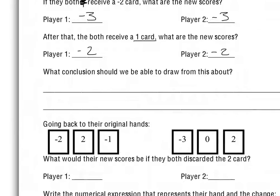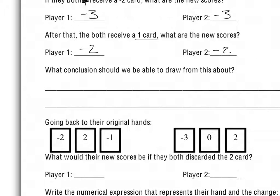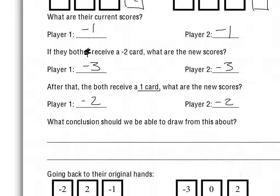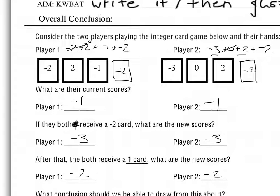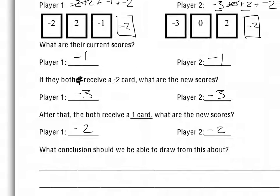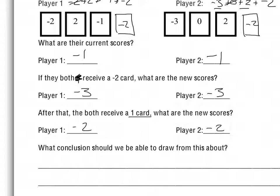You should recognize that we get negative 3 for both of them, and then we also get negative 2 for both of them. Were your scores the same in the beginning? Yes — negative 1 and negative 1. Did we add the same amount to both sides? We added negative 2 and then positive 1. Were your values still the same for player 1 and player 2 after the additions were done? Yes — both at negative 2. So why did those values remain the same?